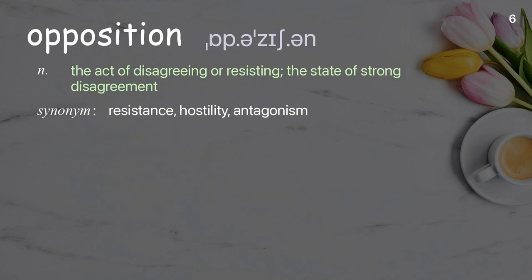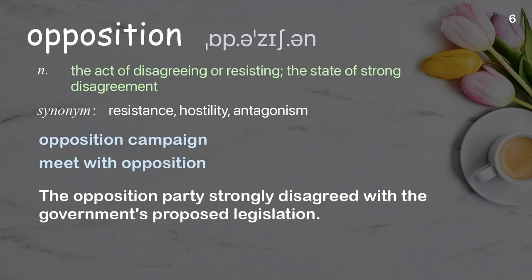Opposition. The act of disagreeing or resisting; the state of strong disagreement. Examples: opposition campaign, meet with opposition. The opposition party strongly disagreed with the government's proposed legislation.